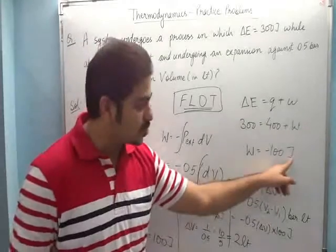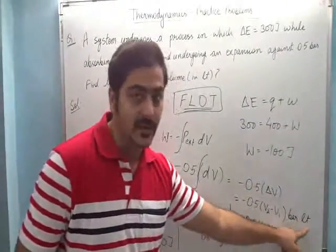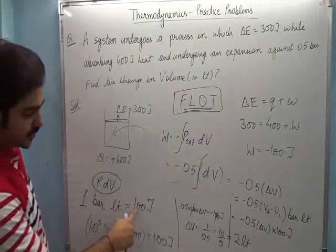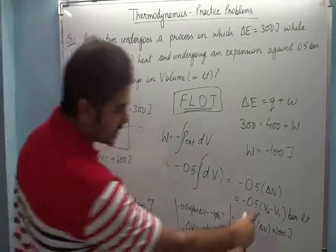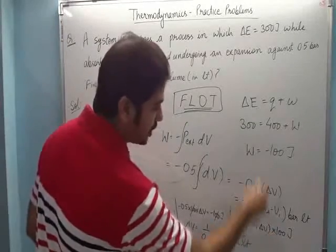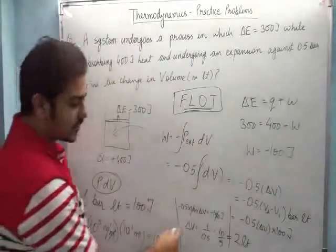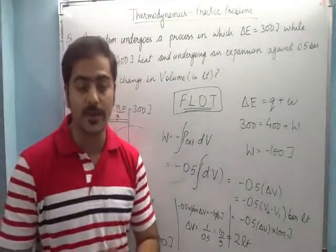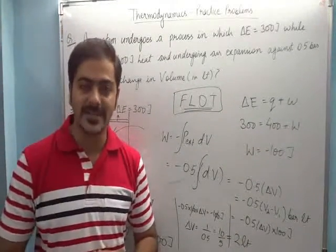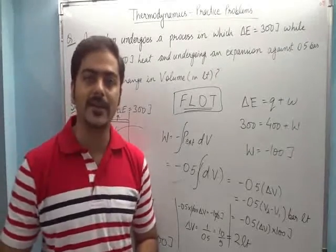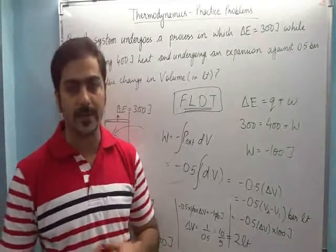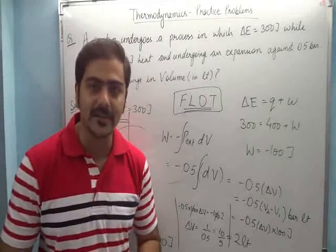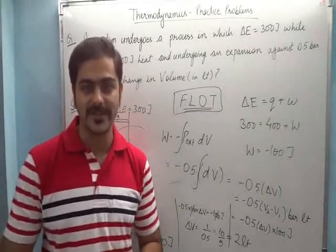But that's in joules and this unit is bar liter. But we just proved that one bar liter is equal to 100 joules. So effectively I multiplied by 100 on this side, and then equated both. So the answer came as 2 liters. So the first law is a very, very important law. Many questions come on this, and in upcoming video lectures we will discuss many more questions on this particular law. So subscribe to the channel and keep sharing it with your friends. Thank you.